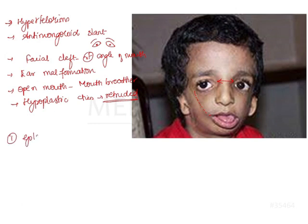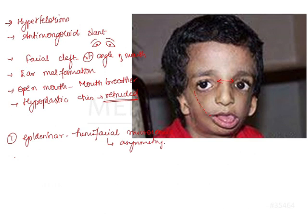Starting with Goldenhar syndrome — oculo-auriculo-vertebral dysplasia — it is mainly seen as hemifacial microsomia, meaning one side of the face remains underdeveloped, resulting in facial asymmetry. However, in this image, both the right and left sides appear almost symmetrical. Since there is no facial asymmetry, we can eliminate option one, Goldenhar syndrome.